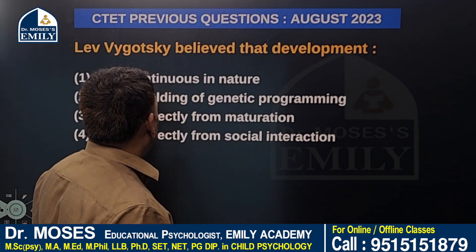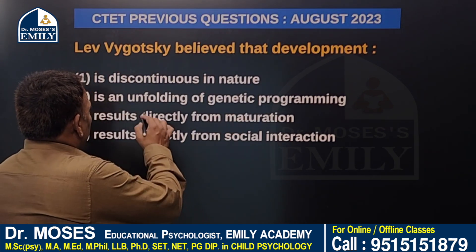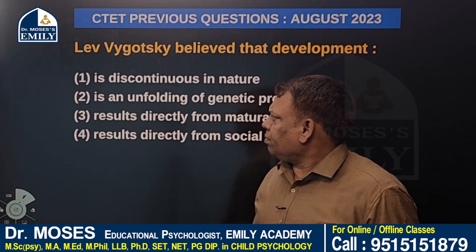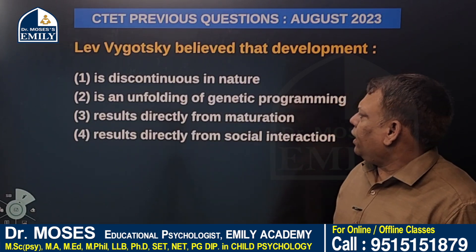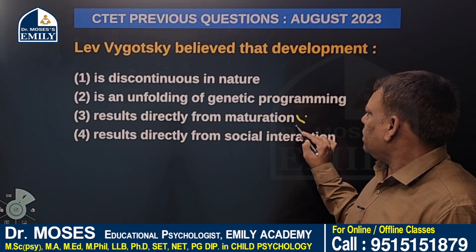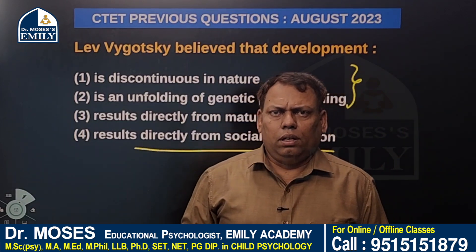In one CTET examination, this question was given: Vygotsky believed that development — option one: is discontinuous in nature; option two: is an unfolding of genetic programming; option three: results directly from maturation. These options are not correct. The correct answer is option four: results directly from social interaction — when children interact with siblings, peer groups, and teachers in day-to-day life situations and are exposed to physical, social, and cultural environments.